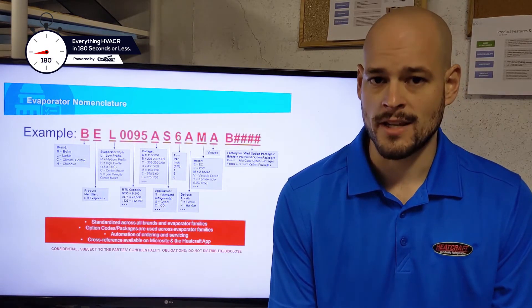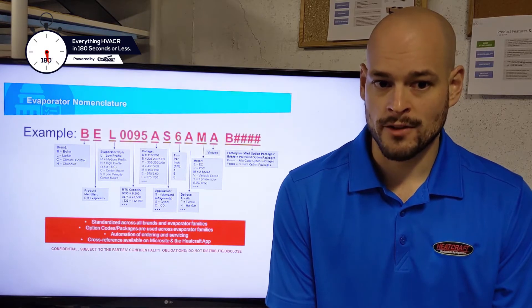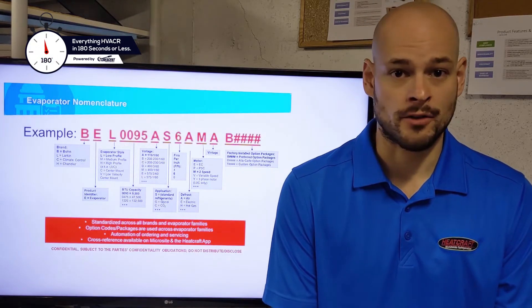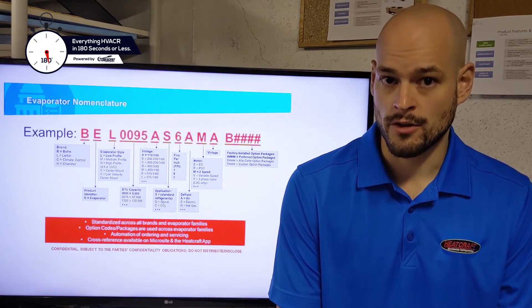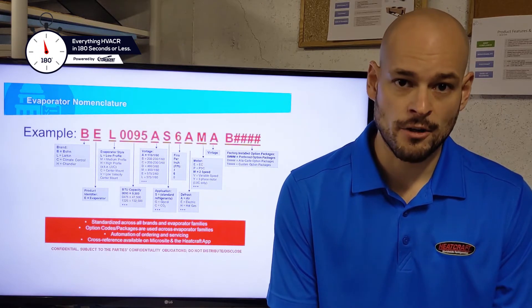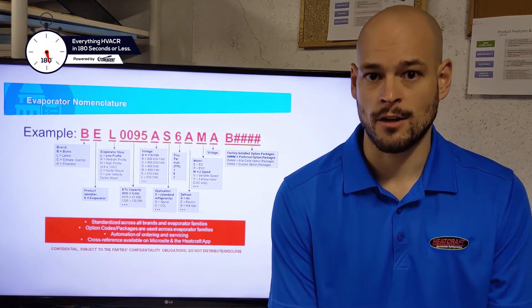Your next digit is going to be the evaporator style. For low profiles, it's always going to be an L. Medium profiles are an M. High profiles or the large unicoolers are going to be an H. Center mounts will be a C, and the low velocity center mounts will be a V.